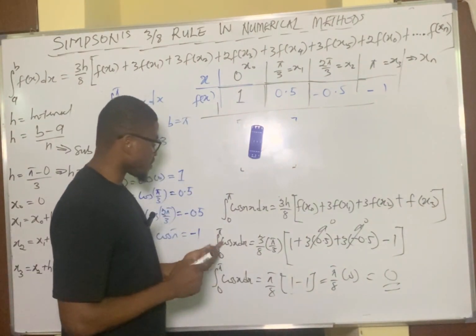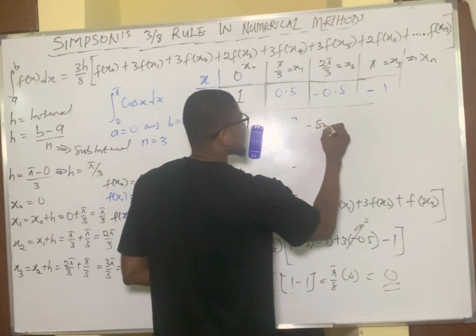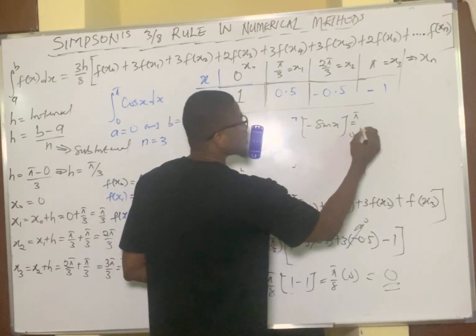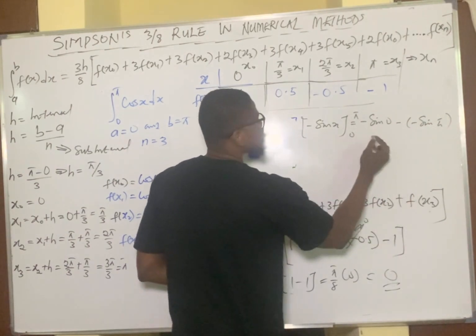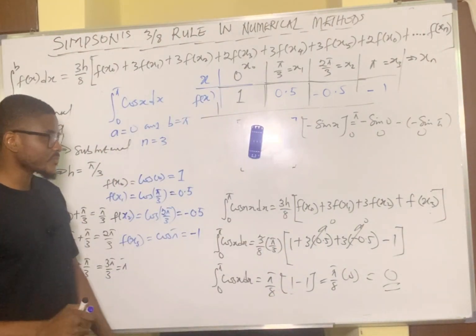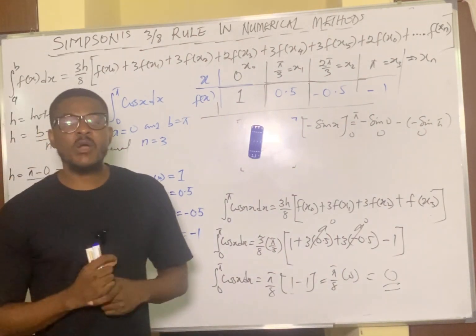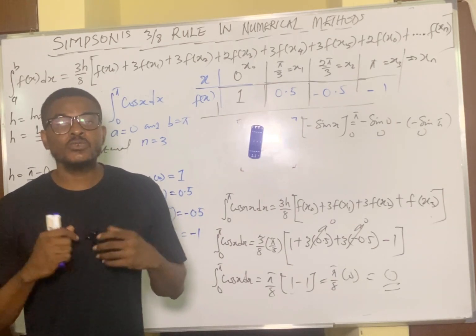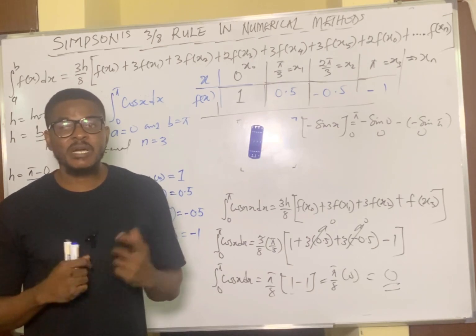Let's verify this by normal integration. Integrating cos(x) from 0 to π gives [sin(x)] from 0 to π, which equals sin(π) minus sin(0). Since sin(0) = 0 and sin(π) = 0, the value is 0. This confirms the approximate value obtained using Simpson's 3/8 rule. In the next video we'll be looking at Simpson's 3/8 rule for a logarithmic function. Subscribe and turn on bell notifications so you don't miss that video. See you in the next video!